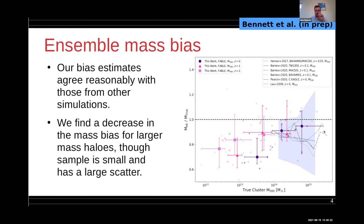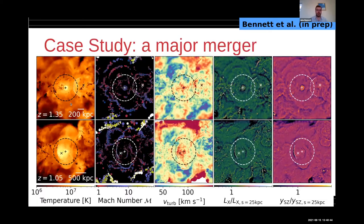Looking at a specific case study, we're going to zoom in on one particular halo undergoing a major merger. This is a halo that becomes about 1 or 2 times 10^15 solar masses at redshift zero. This is at redshift 1.35. We see the main progenitor in the center of all of these panels, and coming in from the right is a major merging cluster with a mass ratio of about two to one.